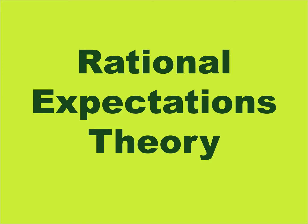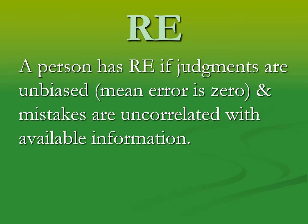Rational expectations theory implies that we probably don't need to know our actual probability. The leading theoretical effort to formalize the link between subjective probabilities and the real world is known as rational expectations, or RE theory. A simple characterization is: a person has rational expectations if their judgments are unbiased — meaning the mean error is zero — and mistakes are uncorrelated with available information.